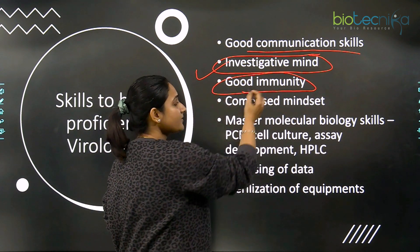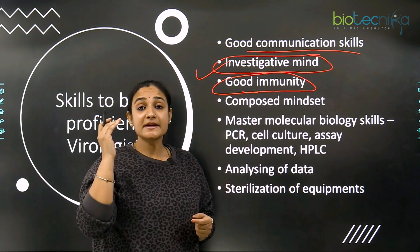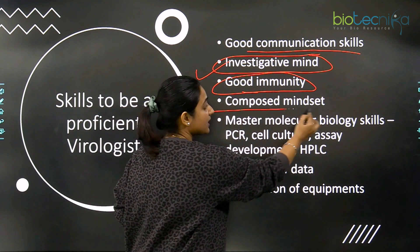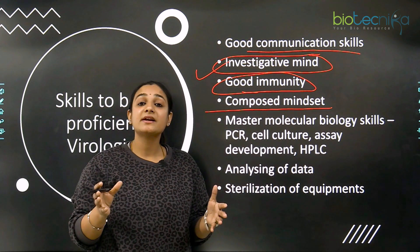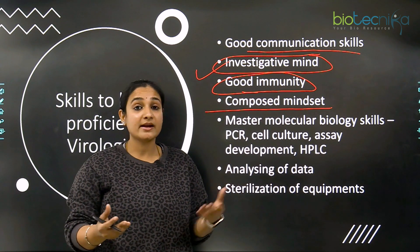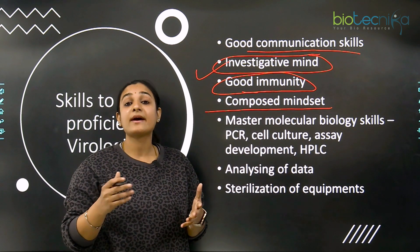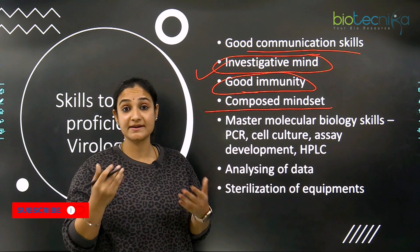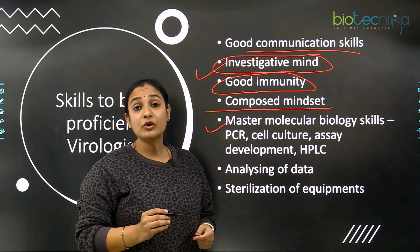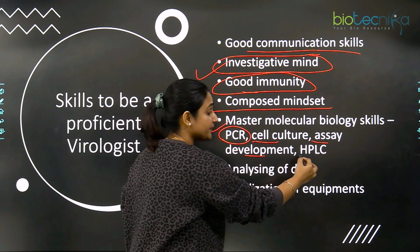The third skill is immunity. A virologist always deals with viruses, many of which affect human beings, so his immunity should be strong enough that he doesn't become prone to diseases or fall sick very often. The next skill is a composed mindset. When dealing with viruses, especially during a pandemic like COVID, the responsibility of a virologist quickens and he must work at a faster pace with a calm and composed mind. He also needs to master molecular biology skills like polymerase chain reaction (PCR), cell culture, assay development and HPLC.